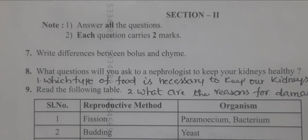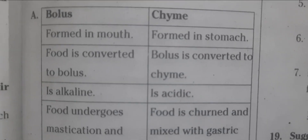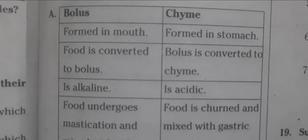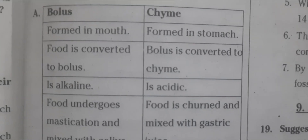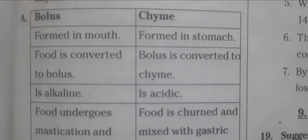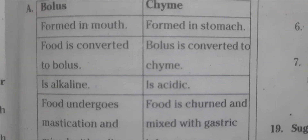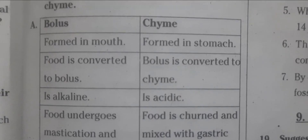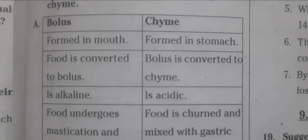Seventh question: write the differences between bolus and chyme. Bolus is formed in the mouth; chyme is formed in the stomach. Food is converted to bolus; bolus is converted to chyme. Bolus is alkaline; chyme is acidic. In bolus, food undergoes mastication and is mixed with saliva. In chyme, food is churned and mixed with gastric juice.